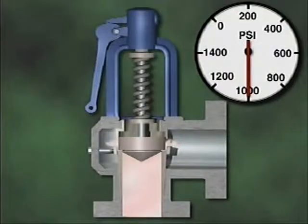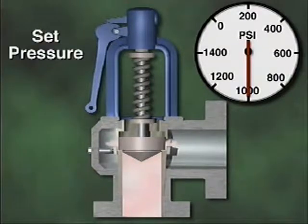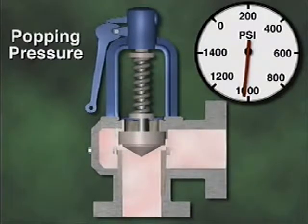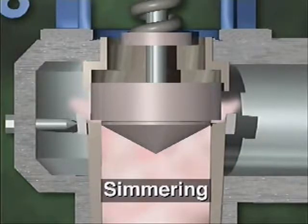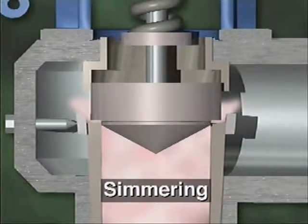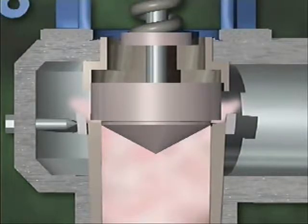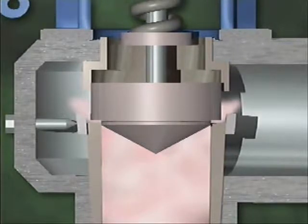The pressure at which the valve's disc begins to lift off the seat is called the valve's set pressure. The pressure at which the valve actually pops open is the popping pressure. In most cases, simmering occurs briefly before a safety valve opens fully. During simmering, the disc is only slightly lifted and the valve discharges a small amount of fluid. Simmering lasts for only a fraction of a second until system pressure acts on the lip of the disc.